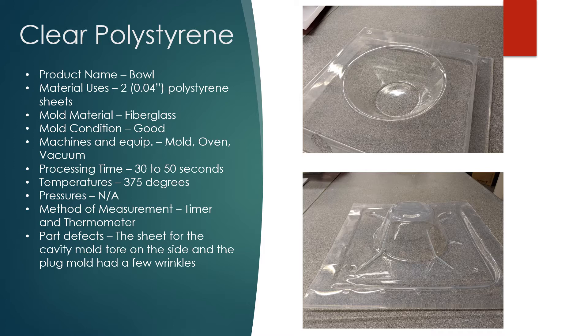Processing time for the .04 thickness has to be in the oven for 30 to 50 seconds at 375 degrees.